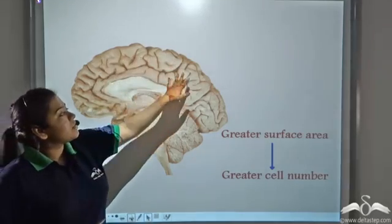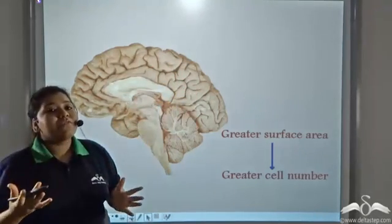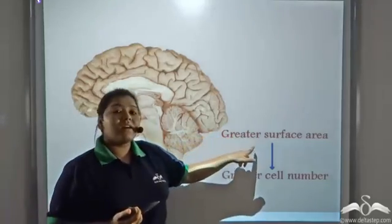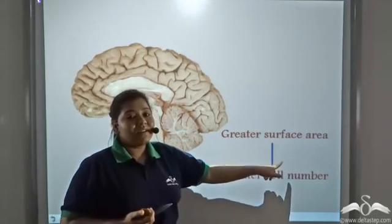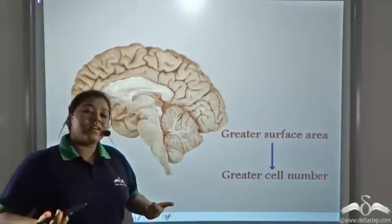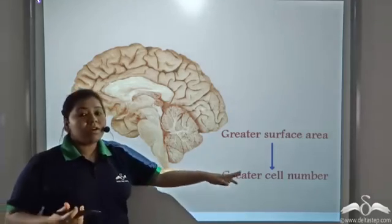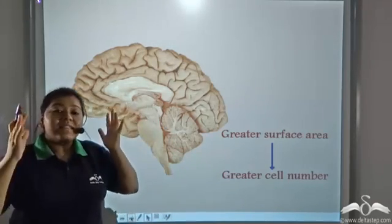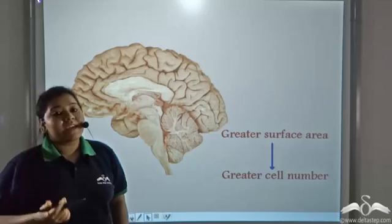If there is more convolutions, then there will be a greater surface area, and if there is a greater surface area, then more cells can be accommodated in the limited space of our head.